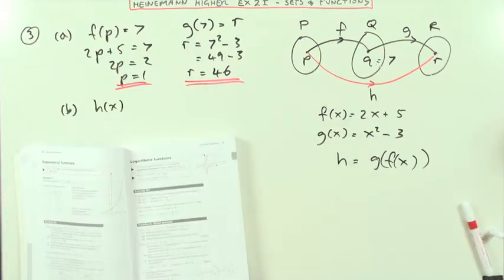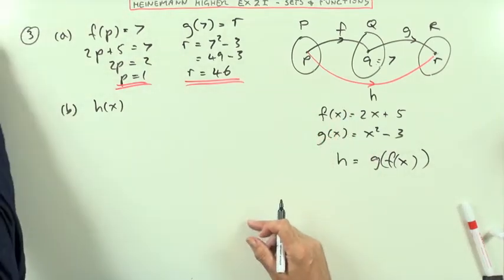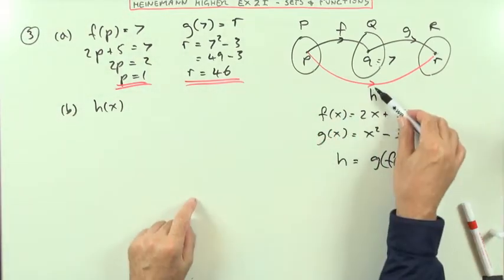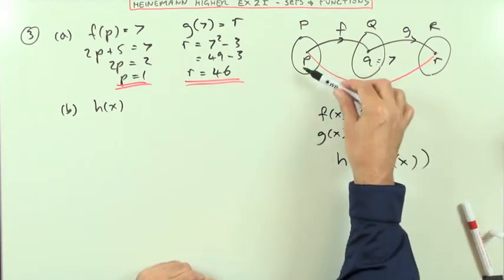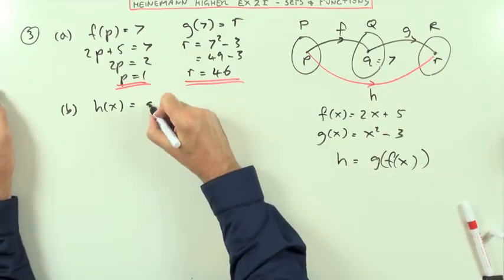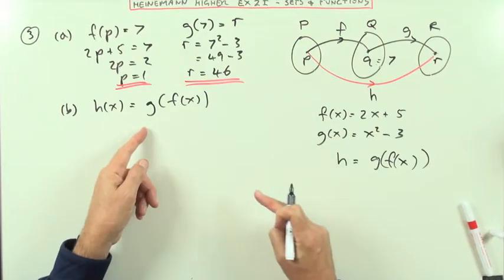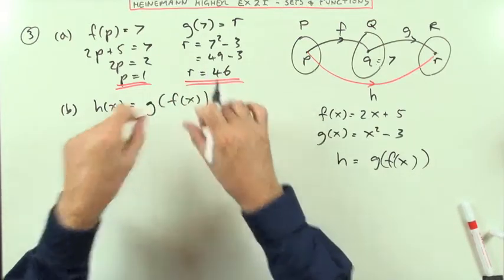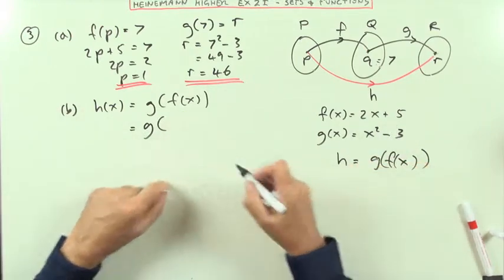Part b: find a formula for h of x in terms of x. So it means what does h do? Well h is that composition. It does the same thing as letting f operate and then g operate. So h is going to be the composition. You let f operate first and then let g take over afterwards acting on the answer it's produced. Well what does f do to anything it gets hold of? 2x plus 5.